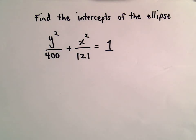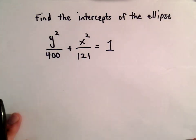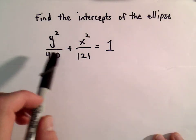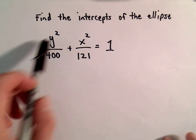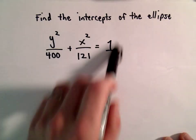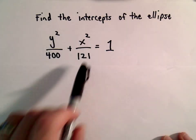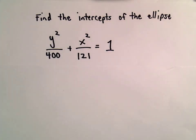In this example we're going to find the x and y intercepts of an ellipse. All we're trying to do is figure out where our ellipse, which is going to be centered at the origin, crosses the x and y axis.